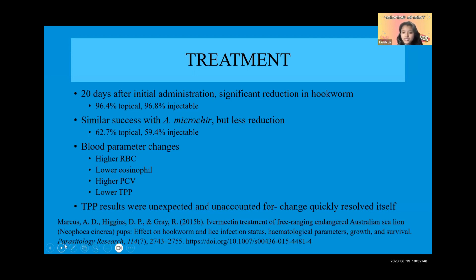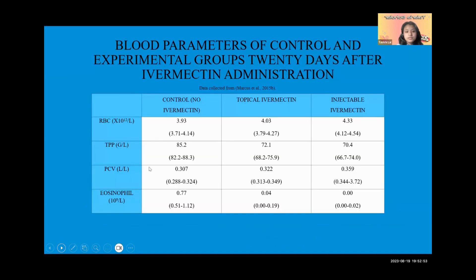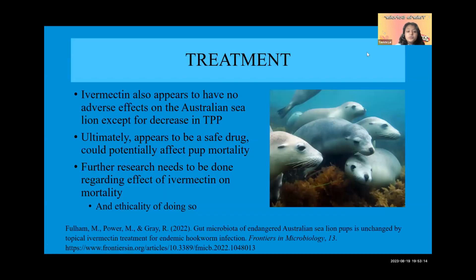This unexpected decrease in total plasma protein is a potential area for researchers to look into in further study. Here are the effects of ivermectin on blood parameters. Ivermectin also appears to have no other adverse effects on the Australian sea lion except for the decrease in TPP. There were no reactions to the medication, and it ultimately appears to be a pretty safe drug that could potentially improve pup mortality and be a good solution for these low populations.